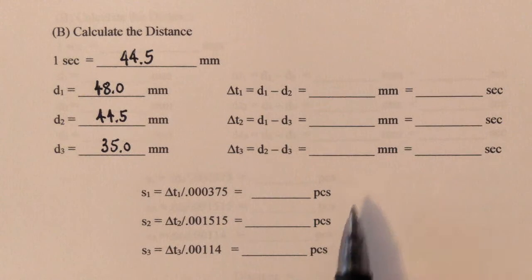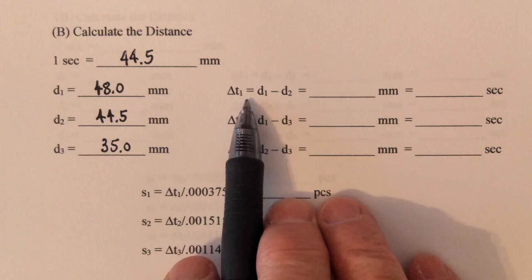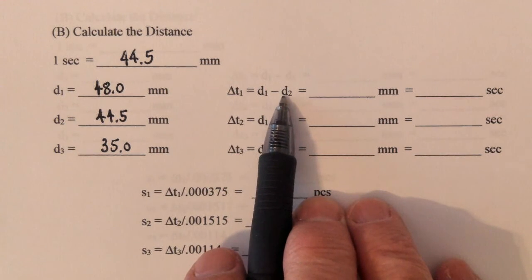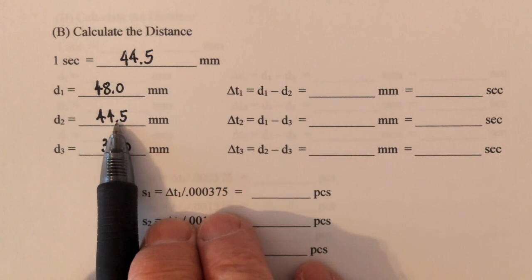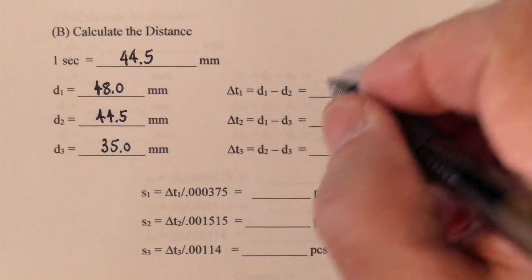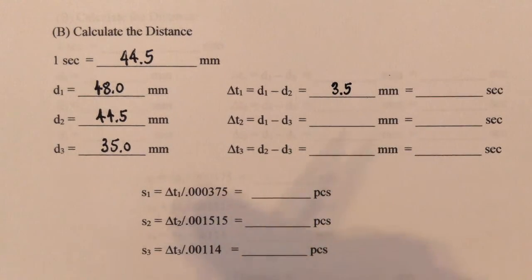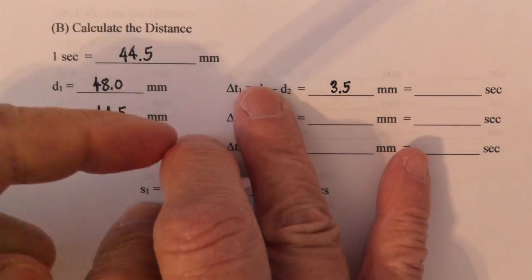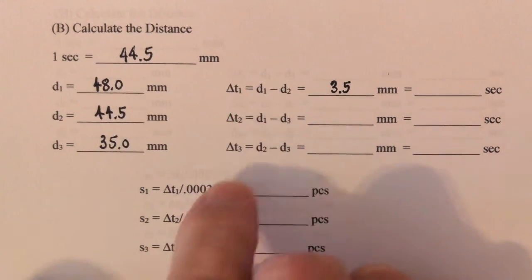If you'll notice, we're going to calculate the change in time, the difference in the time. It tells you what to do. Take D1 and subtract D2. It takes D1, that's 48 minus 44.5, and that is 3.5. That's the difference between our three race cars, from the first pulse to the second.